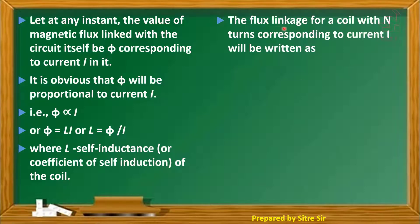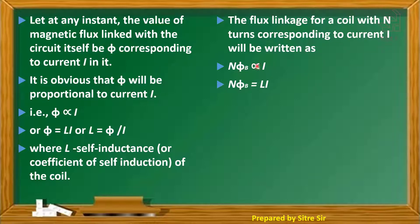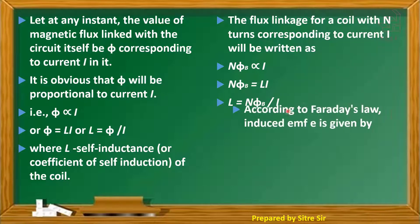The flux linkage for a coil with N turns corresponding to current I is written as N into phi_B, that is magnetic flux, which is proportional to I. To equate this proportionality, take constant L: N into phi_B equals L into I, that is L equals N into phi_B upon I.